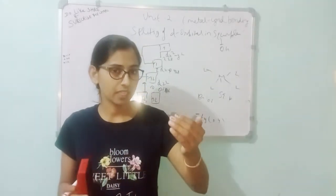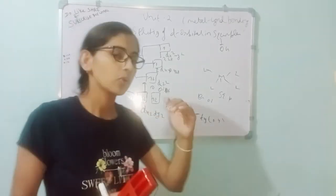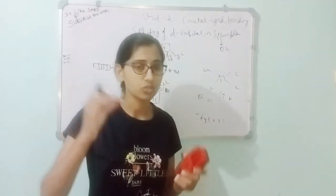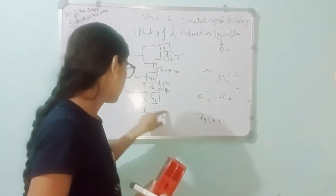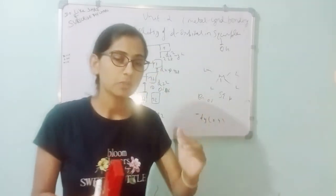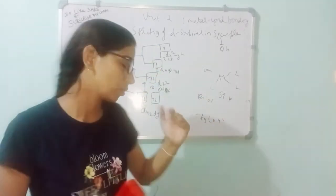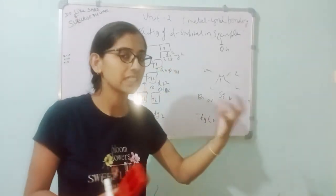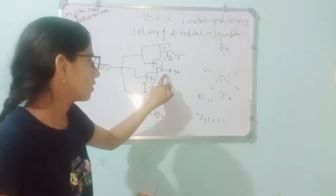When the z-axis ligands are removed, stability increases and energy is reduced. Remember that z-axis energy is less. There are three z-type orbitals: dxy, dyz, and dzx. The z-type orbitals have the least energy, so dyz and dzx will have the lowest energy levels.